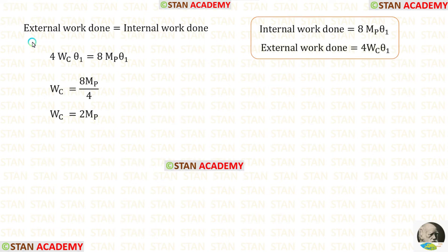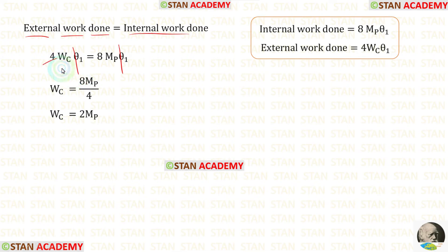Now let us equate the external work done and the internal work done. Eliminating theta1 and taking 4 to the denominator, we get the collapse load wc equal to 2mb.